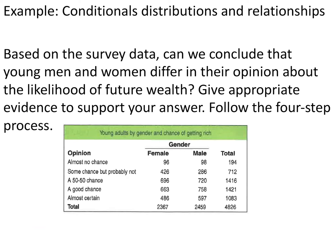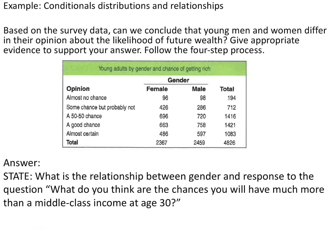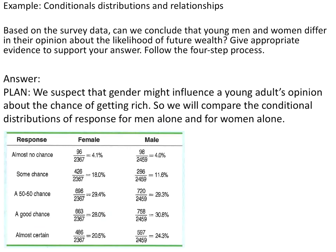The first thing we need to do is state what problem we're trying to solve. State: what is the relationship between gender and response to the question, 'What do you think are the chances you will have much more than middle-class income at age 30?' By writing this out, either you or the person grading this problem will know exactly what answer you are trying to solve.